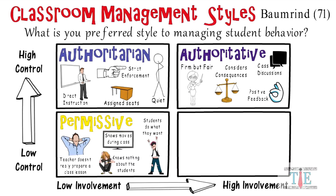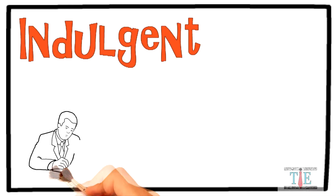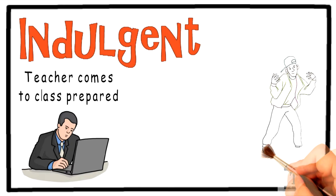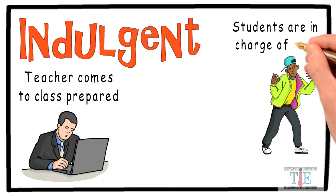And lastly, indulgent. Very little control but highly involved in the students. The indulgent teacher takes their career as a teacher very seriously. They work very hard to plan fun and exciting lessons, and you can count on this teacher to come to class prepared. The indulgent style of classroom management believes in a student-empowered learning model. The indulgent teacher lets the students run the classroom without intervening when they probably should.